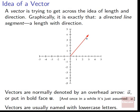We denote a vector with an overhead arrow, like U with an arrow above it, to indicate we're talking about the vector U. We can also write it in boldface. Vectors are normally shown with lowercase letters — U and V are very common. We use the arrow notation in this course, although you might see boldface in textbooks.